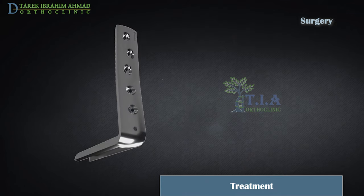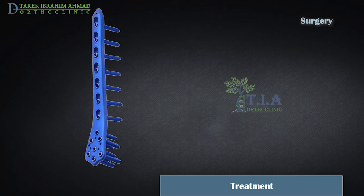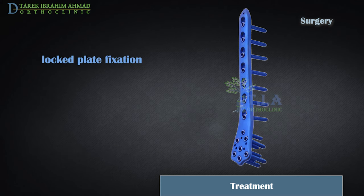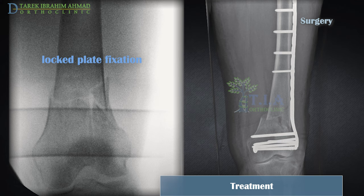The use of a 95-degree blade plate or DCS is used less frequently today. Periarticular locked plates have replaced these non-locked implants for most supracondylar fractures, in which screws are inserted that lock into the plate, forming a fixed-angle construct. In this procedure, the bone fragments are realigned and held together with screws and plates.